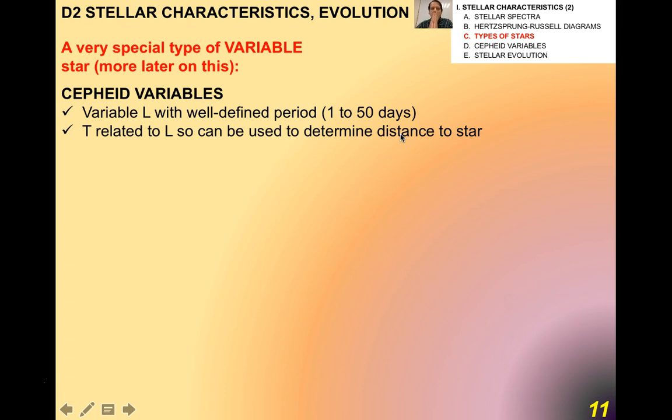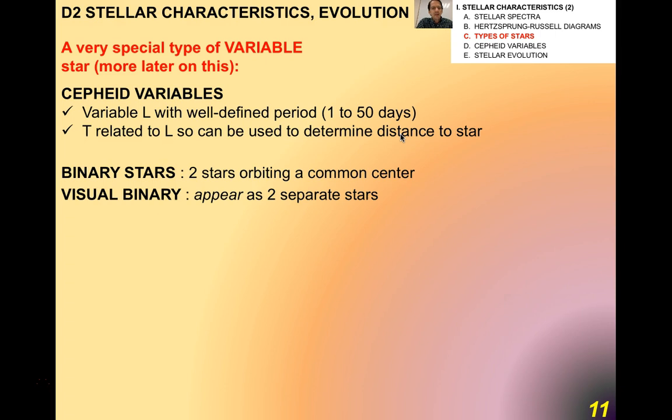Now, a very special type of variable star is called the Cepheid variable. These are variable stars with a luminosity that's very well defined and very regular. There's a period, and it turns out that the period is related to the luminosity. So that can be used to determine the distance to a star. These periods can be anywhere between 1 and 50 days. The reason why there's a variation in luminosity is because the star expands and contracts on a regular basis.